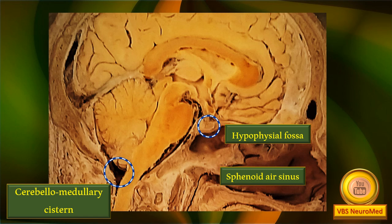Also seen prominently here is the pituitary fossa, also known as the hypophyseal fossa, shown in a dotted circle. On the other side there is a larger dotted circle — that is the cerebellomedullary cistern, a gap filled with CSF. The pontine cistern is not very clearly seen here, so it is not shown. Remember, this is the first tour, so we are not confusing things with too many details.